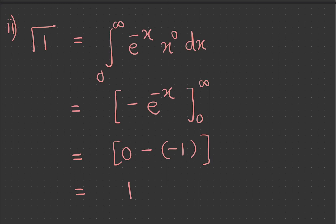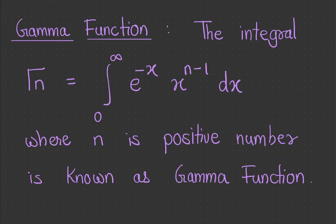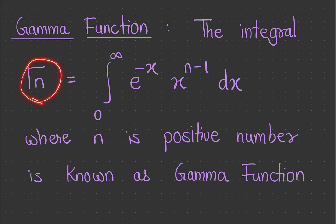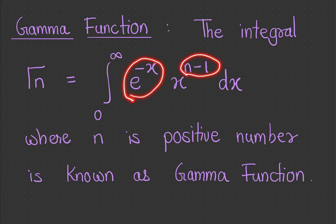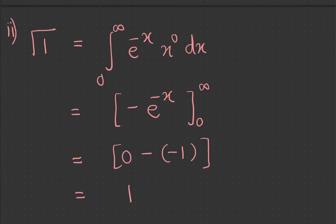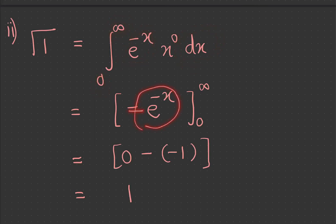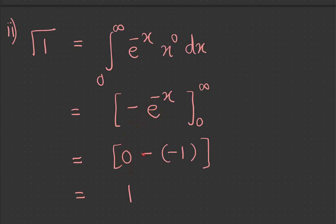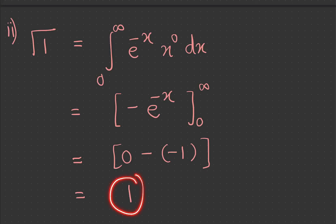The second property is gamma of 1 equals 1. By definition, gamma of 1 is the integral from 0 to infinity of e raise to minus x into x raise to 0 dx, which simplifies to the integral of e raise to minus x from 0 to infinity. Integrating gives minus e raise to minus x from 0 to infinity. Substituting limits: at infinity e raise to minus infinity is 0, and at 0 e raise to 0 is 1, so we get minus of minus 1, which equals 1. Therefore gamma of 1 equals 1.